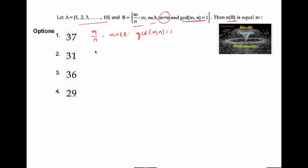Starting with 1, we can write 1 upon 2, 1 upon 3, 1 upon 4, 1 upon 5 and so on up to 1 upon 10. So here total 9 elements are there.